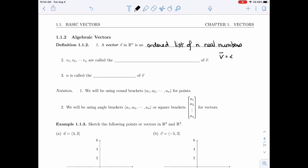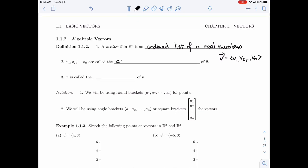V is V1, V2, through Vn, where V1, V2, Vn are real numbers. They're called the components or coordinates of the vector V, and n is called the dimension.